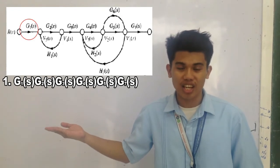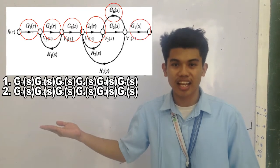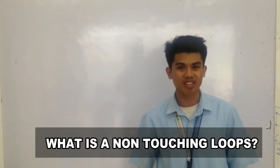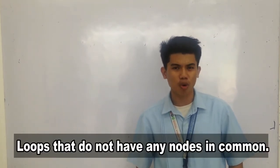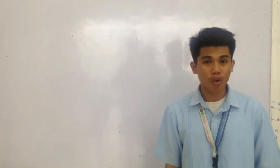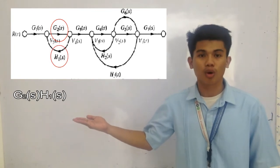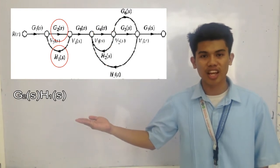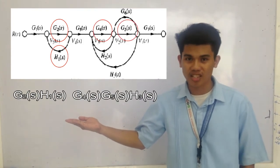The second forward path gain is G1(s)G2(s)G3(s)G4(s)G6(s)G7(s). Next is non-touching loops. A non-touching loop consists of loops that do not have any nodes in common. In the figure, G2(s)H1(s) does not touch the loop G4(s)H2(s), and G2(s)H1(s) does not touch the loop G4(s)G5(s)H3(s), and also does not touch G4(s)G6(s)H3(s).